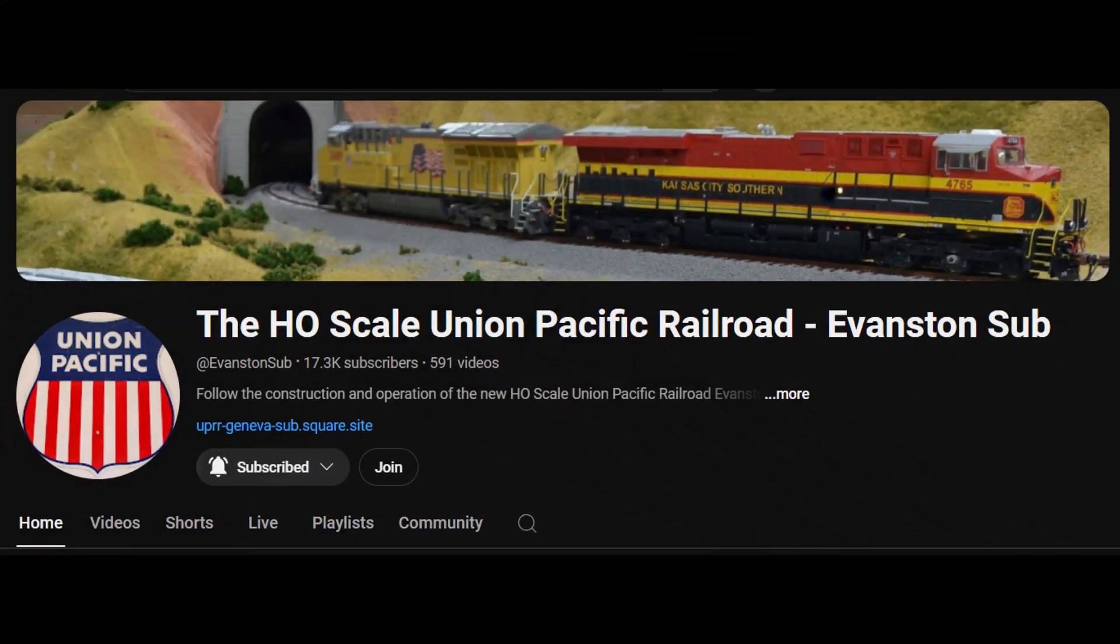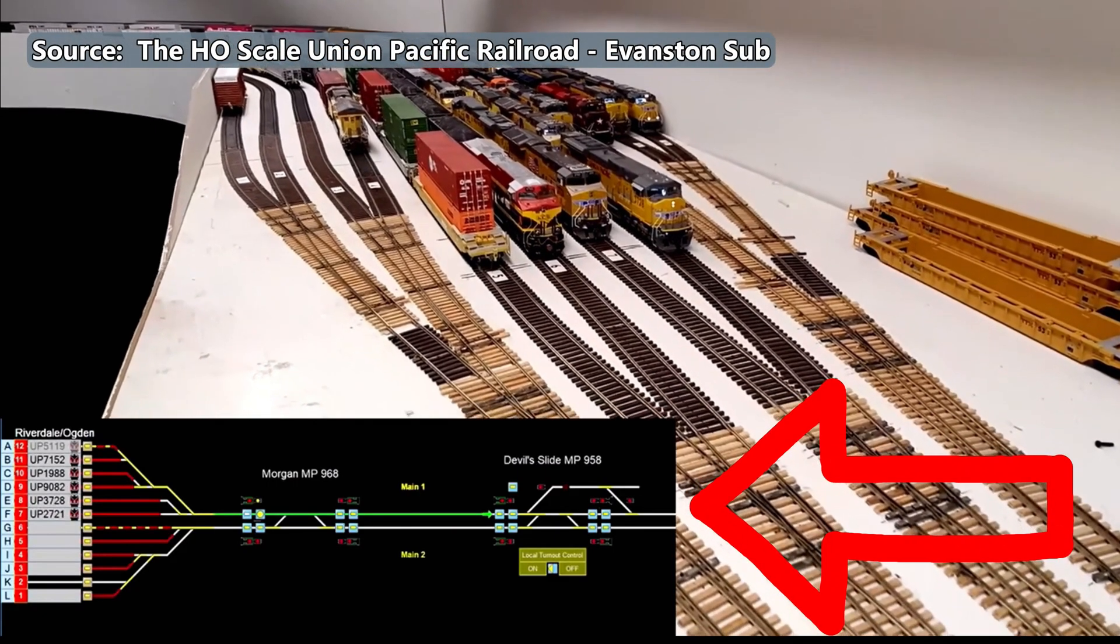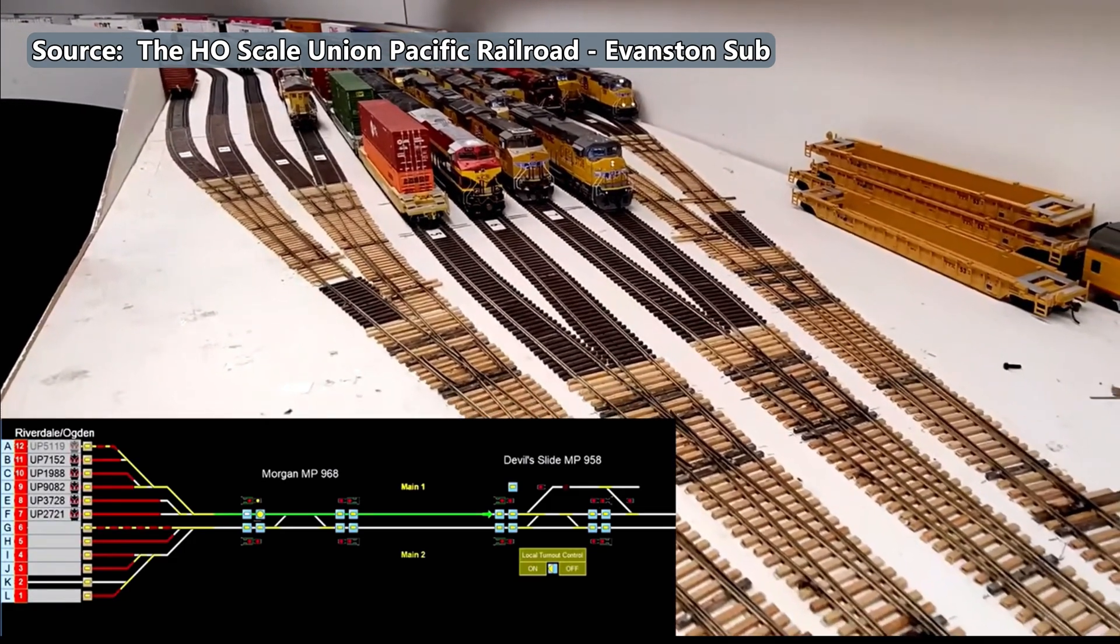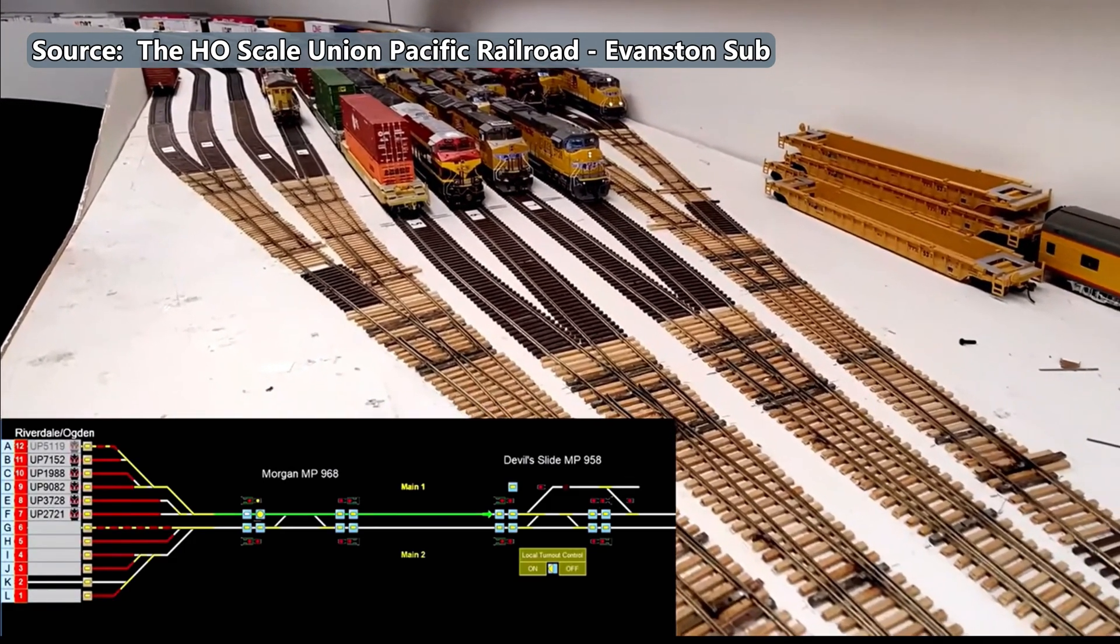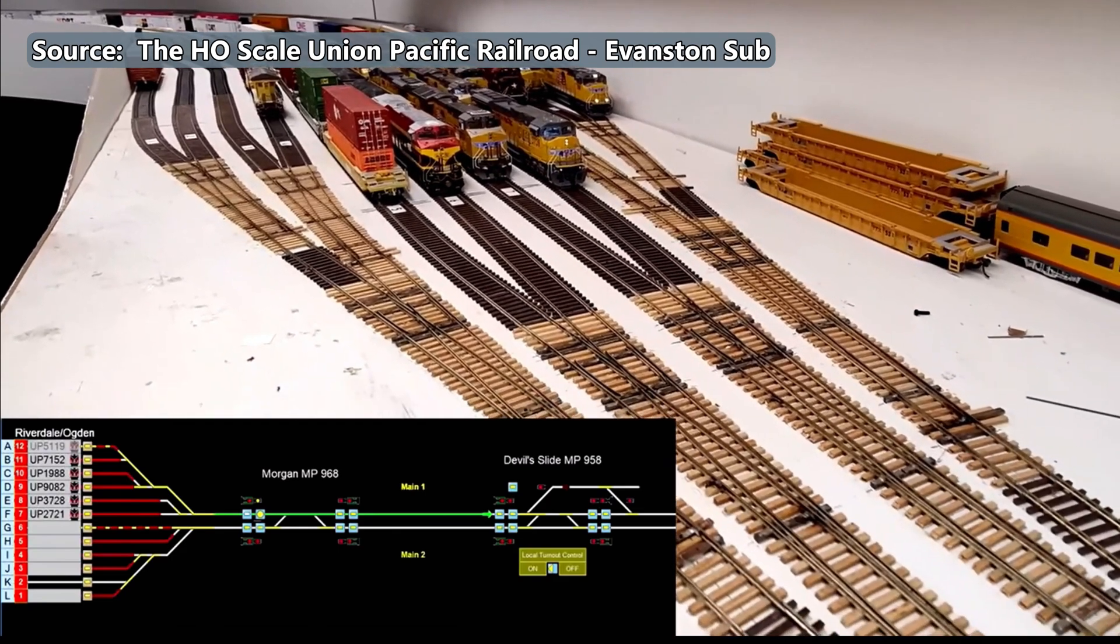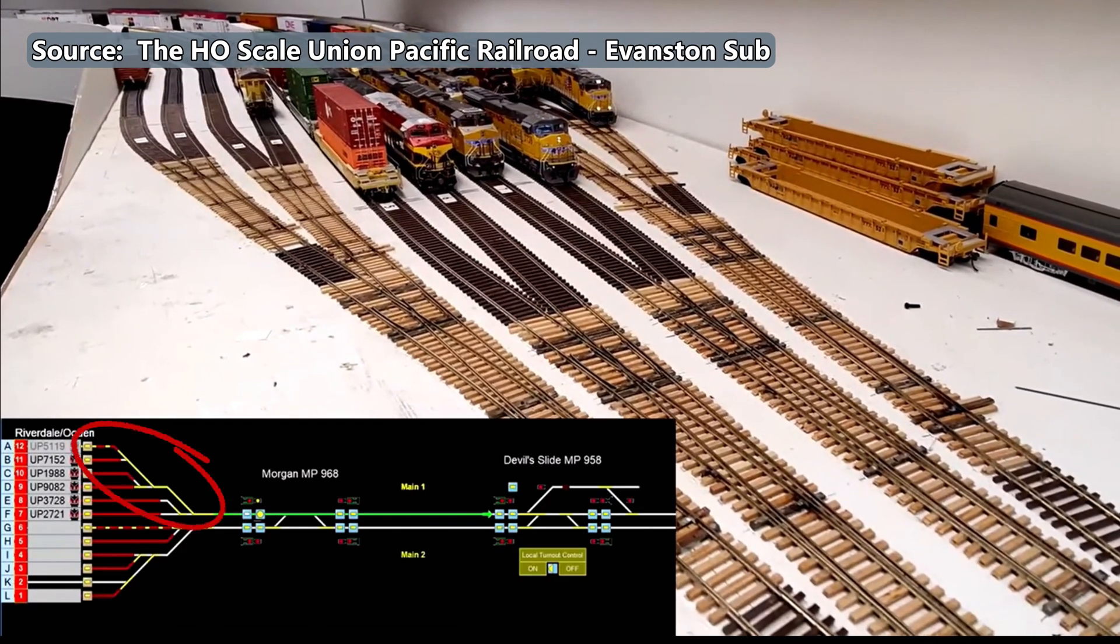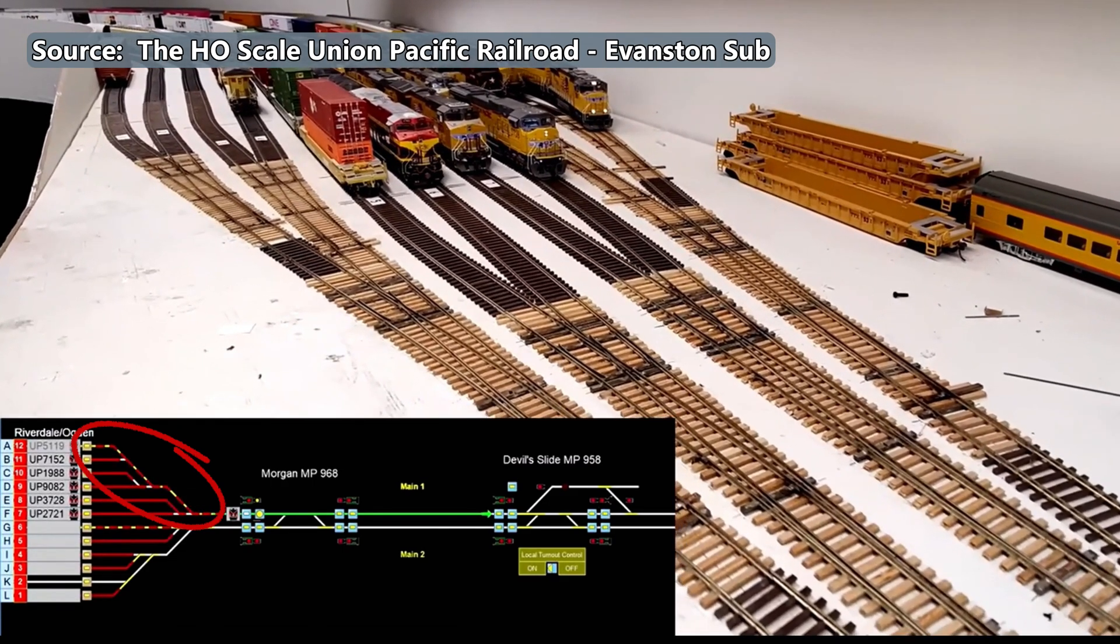Many thanks goes out to Daryl from the HO scale Union Pacific Railroad Evanston sub channel for the use of parts of his videos. Daryl, that is a mouthful. On the lower left portion of the screen, you can see the dispatch panel display for Daryl's layout. The train on track 12 has been cleared into the throat of the staging yard by the dispatcher.